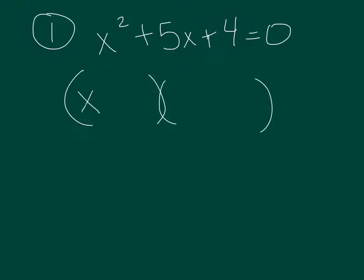So x to the second, so we have x and x. A times c is 4. We figure out 1 times 4, multiplies to 4 and adds to 5. So we put our plus 1, plus 4, still equal to 0. The only difference is now that we're solving, we're going to set, since it has to equal 0, we're going to set each set of parentheses equal to 0.